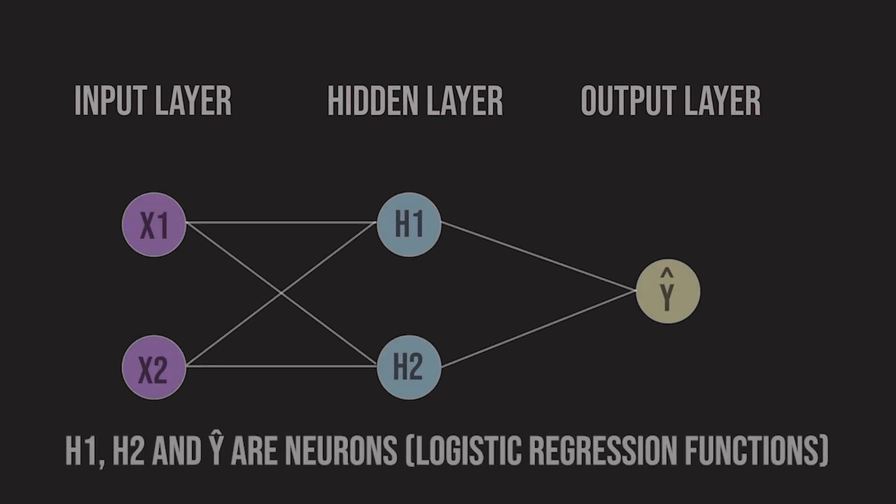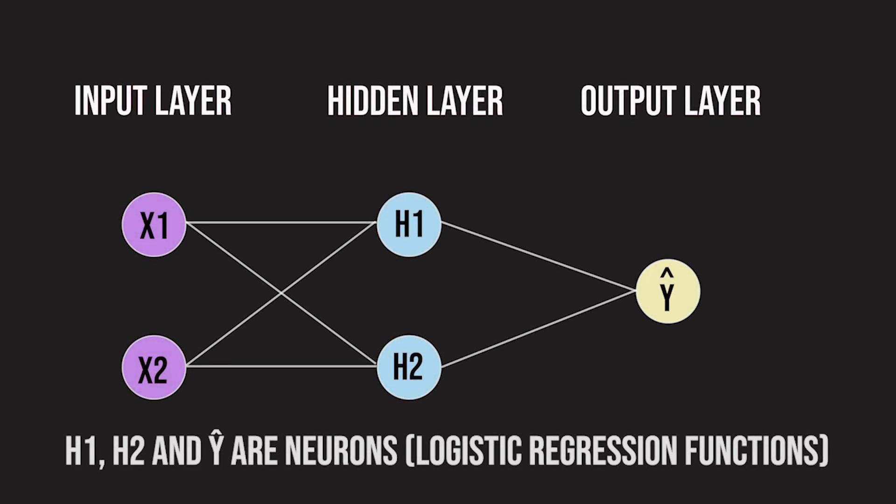In this neural network, H1 and H2 are the neurons in the hidden layer, which lies between the input and output layers. We've successfully solved the problem by stacking two layers of neurons.